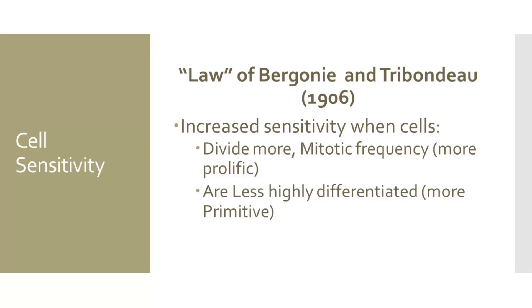It is also stated in their law that the level of cell specialization, also known as cell differentiation, affects the radiosensitivity of the cell. As a cell matures, it changes into different cell types, and as this occurs they tend to become more differentiated. Those that are more specialized in order to perform a specific function are considered highly differentiated. Cells that are less highly differentiated are more sensitive to radiation. Cells that are highly differentiated, such as nerve cells, are more resistant to radiation.